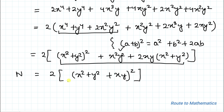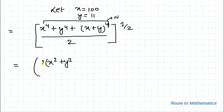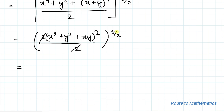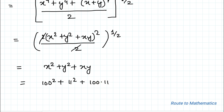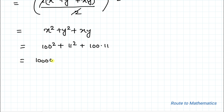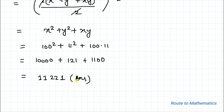Substituting N back, we have: [(x² + y² + xy)² × 2] / 2, to the power 1/2. The 2 cancels out and the square root eliminates the square, leaving x² + y² + xy. With x = 100 and y = 11, this equals 100² + 11² + (100 × 11) = 10000 + 121 + 1100 = 11221. So 11221 is our answer. I hope you understood the solution — thanks for watching, please subscribe and click the bell icon.